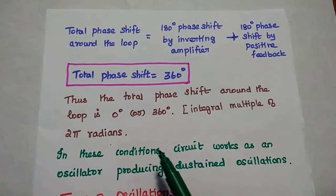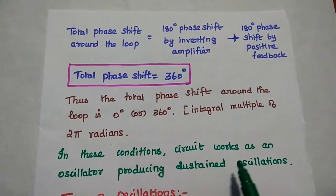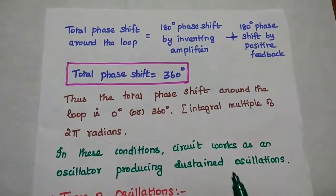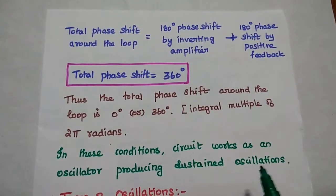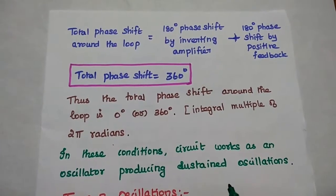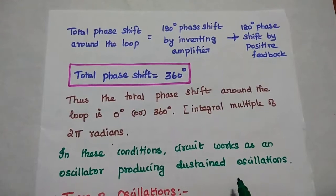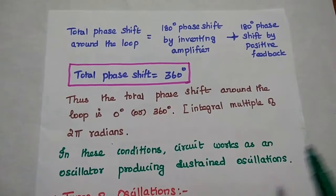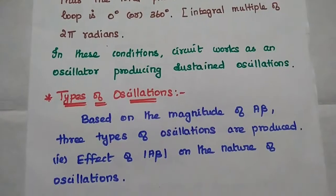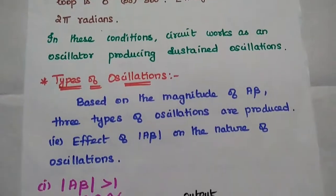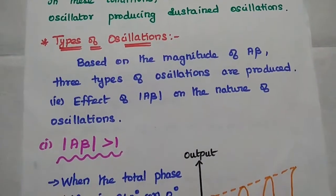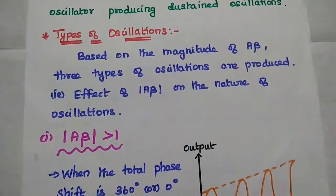When these two conditions are satisfied, the circuit works as an oscillator producing sustained oscillations. Sustained oscillations means oscillations with constant frequency and constant amplitude. Next, we are going to discuss the types of oscillations based on the Aβ value.